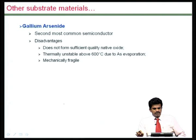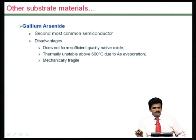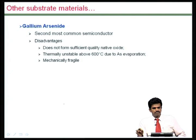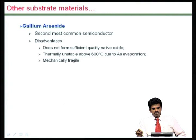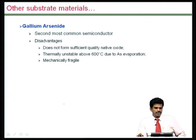One other popular substrate material — again a semiconductor — is gallium arsenide. It has particular advantages especially for building radio frequency and some optical grade devices. It also has some disadvantages, especially in terms of depositing thin films on it, processing at high temperatures, and building truly mechanical components.